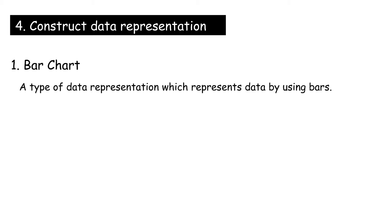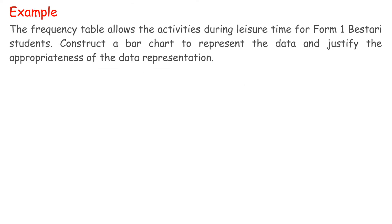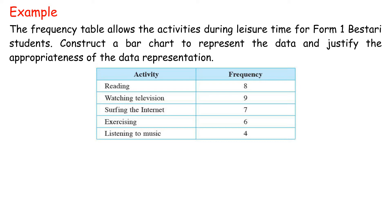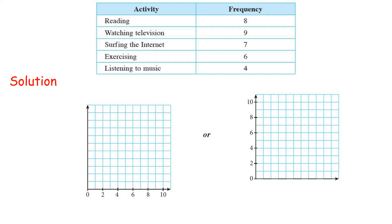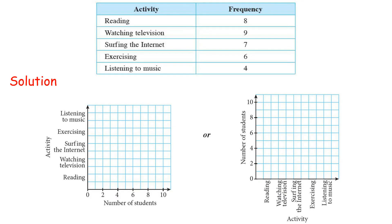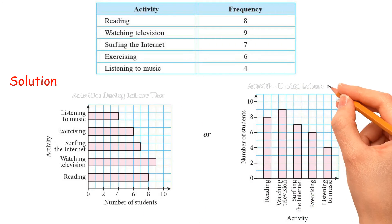Type 1 — Bar Chart: A type of data representation which represents data using bars. It is suitable for showing comparisons between categories. A bar chart can be shown horizontally or vertically. Steps to construct a bar chart: draw horizontal and vertical axes on a grid, choose one axis to mark a suitable scale and label it with the number of students, label the other axis with types of activities, draw bars where the height corresponds to the frequency, and write the title.